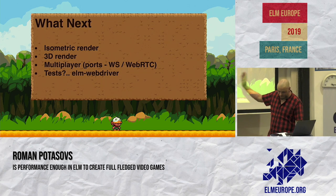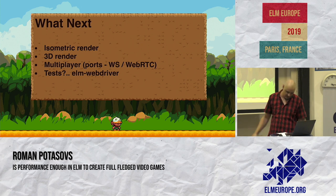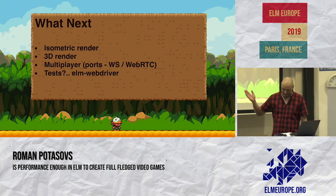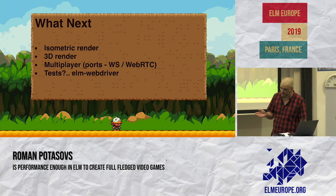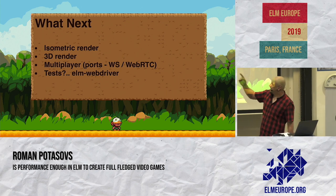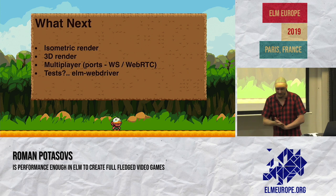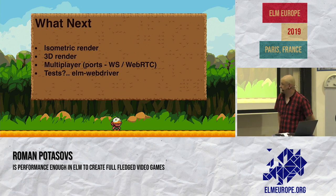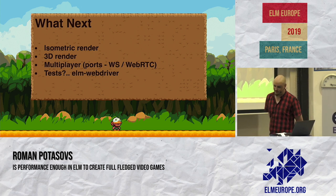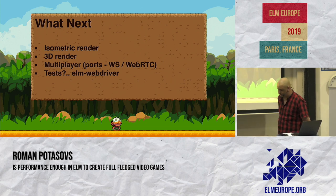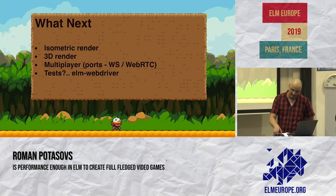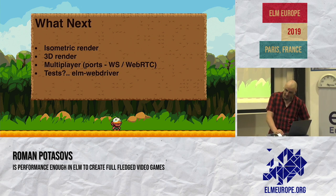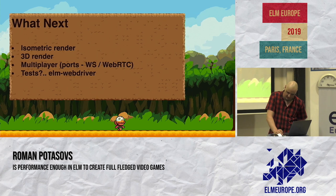What's next for the engine: isometric rendering — currently it has only top-down and side-scroll, next will be isometric since Tiled supports it. 3D rendering — maybe someday. I already had multiplayer working — another story, but we don't have WebSockets natively so we use ports to implement it. This application currently has only unit tests; some time ago I started work on elm-webdriver, a WebDriver interface for Elm where you can run any browser with your Elm code.